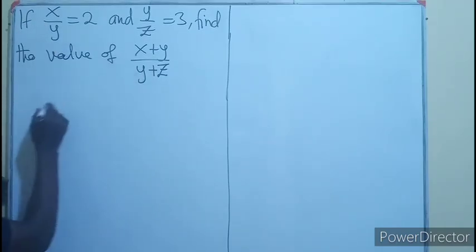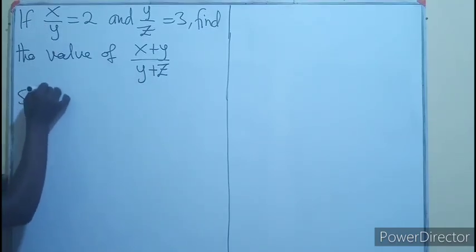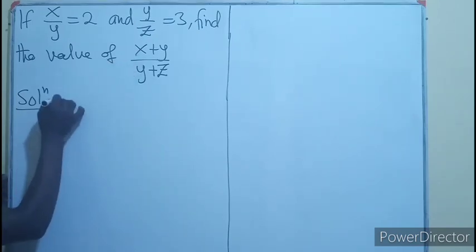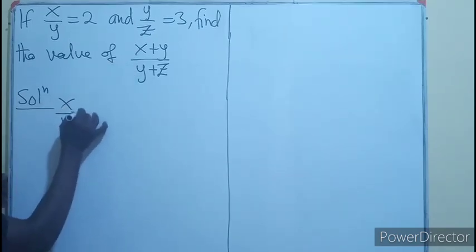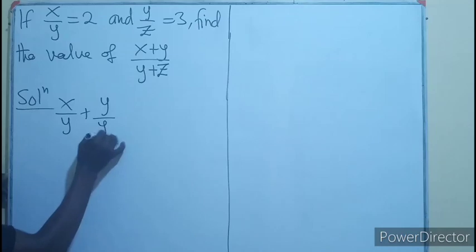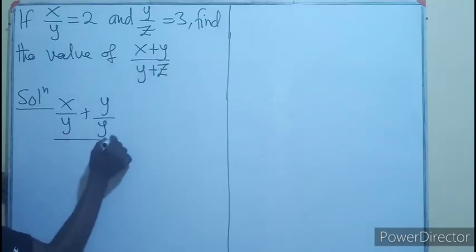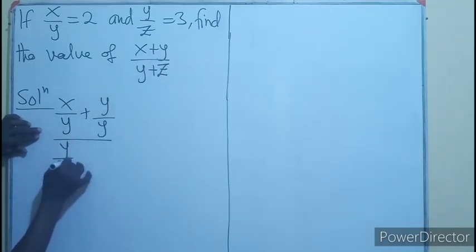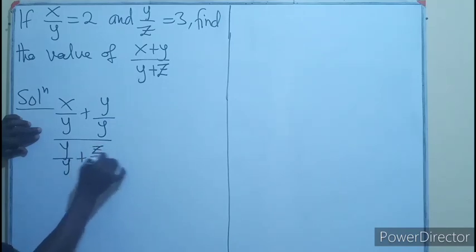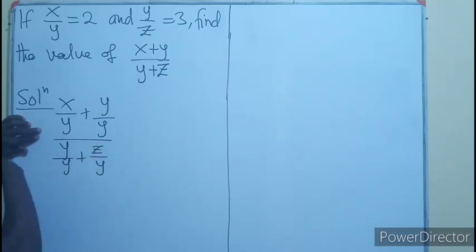So I'll be having x over y plus y over y, which is the numerator, divided by y over y plus z over y. Meaning I'm dividing every term of the numerator by y and every term in the denominator by y.